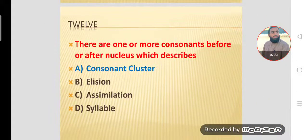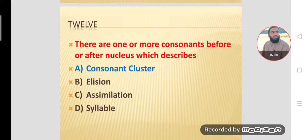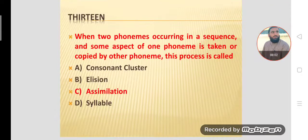MCQ number twelve: When there are one or more consonants before or after the nucleus, this describes a consonant cluster. Up to five consonants can come before or after the nucleus position, and they are technically called a consonant cluster.